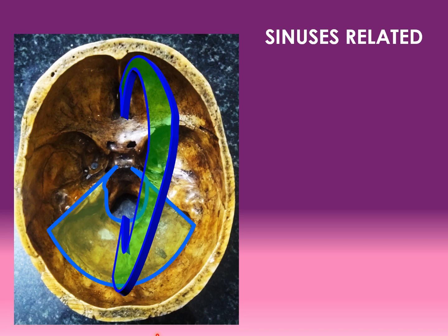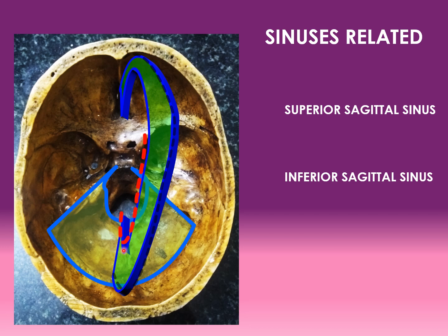Now let us see the sinuses related to the phax cerebelli. The superior margin of phax cerebelli is attached to the superior sagittal sulcus. The sinus related to the superior margin is the superior sagittal sinus. The sinus related to the inferior free margin of the phax cerebelli is the inferior sagittal sinus. At the junction between the posterior end of the phax cerebelli and the tentorium cerebelli, there is another sinus called the straight sinus. Thus the three sinuses related to the phax cerebelli are superior sagittal sinus, inferior sagittal sinus, and the straight sinus.